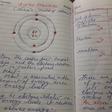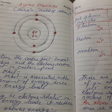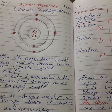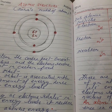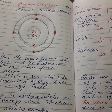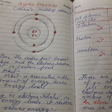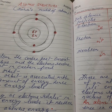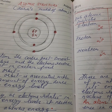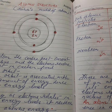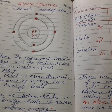As long as the electrons revolve in a fixed orbit, they neither lose nor absorb energy. This means when electrons are revolving in a fixed energy level, they will neither lose nor absorb energy, and this only explains the stability of an atom.